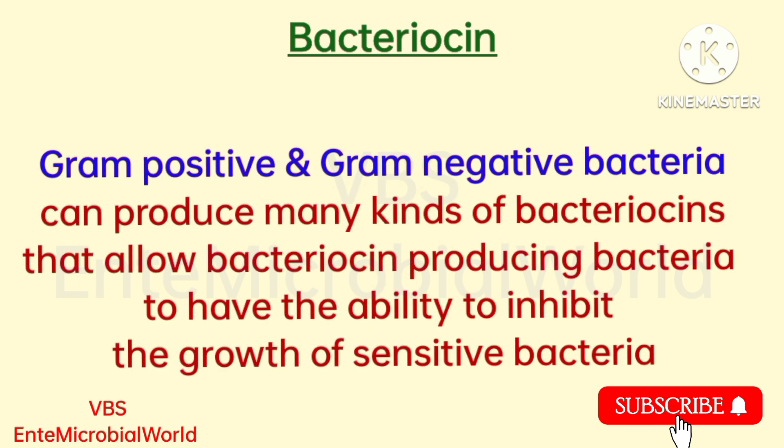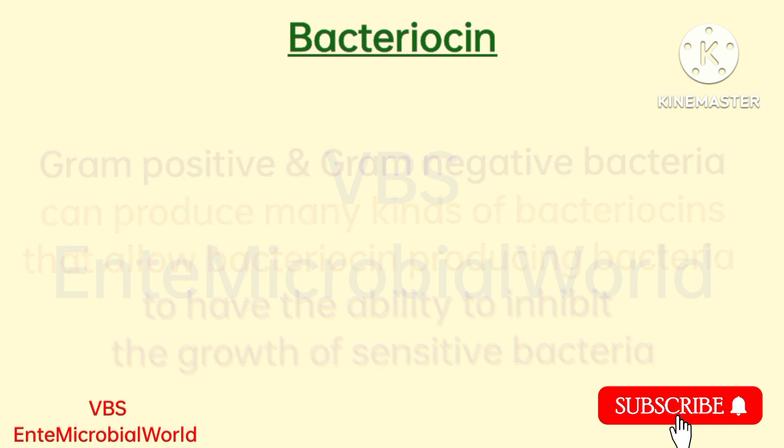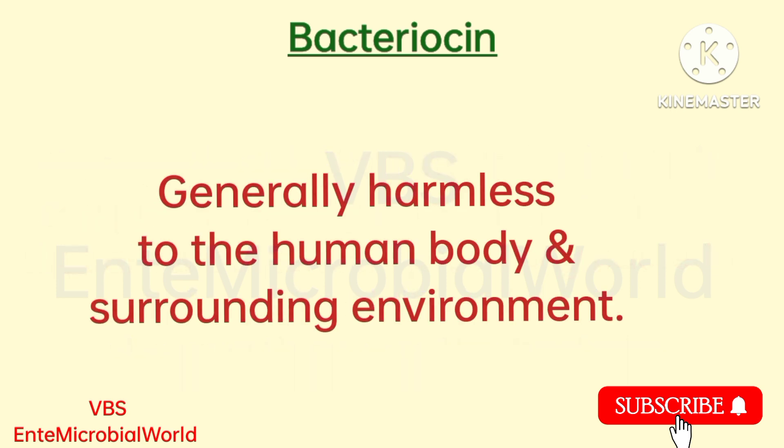Gram positive and gram negative bacteria can produce many kinds of bacteriocin that allow bacteriocin producing bacteria to have the ability to inhibit the growth of sensitive bacteria, generally harmless to the human body and surrounding environment.